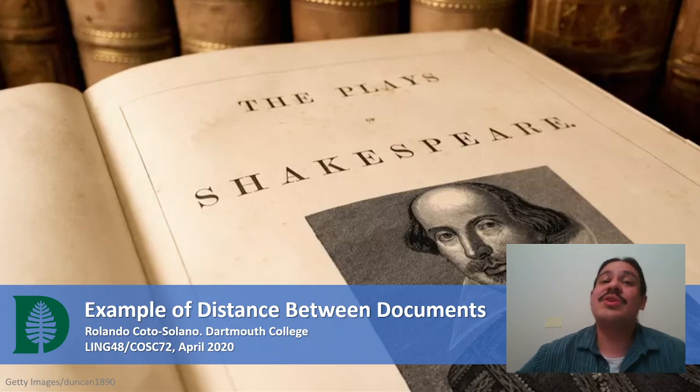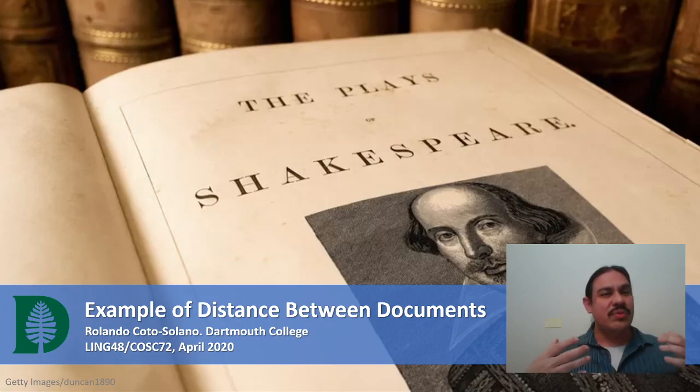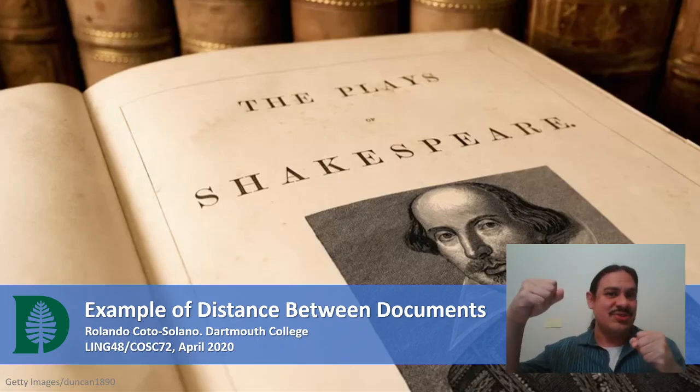In the last few videos we've been looking at documents and distances between documents. At the beginning of the week we looked at a very simple system with three features: whether a document had the word sushi or not, whether a document had the word Hanover or not, and whether the document had the word origami or not. From those three features we built a three-dimensional system so we can measure distances between two documents in these three dimensions.